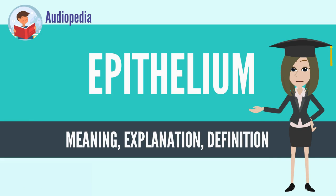Epithelium is one of the four basic types of animal tissue, along with connective tissue, muscle tissue, and nervous tissue. Epithelial tissues line the outer surfaces of organs and blood vessels throughout the body, as well as the inner surfaces of cavities in many internal organs.